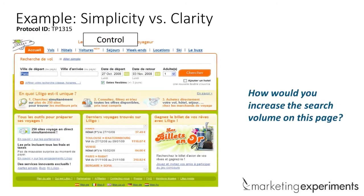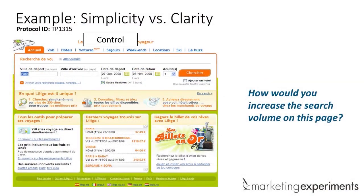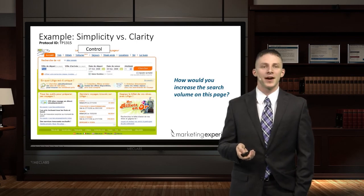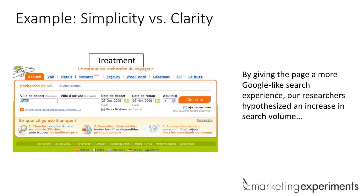Let's look at an example. Audience, how would you increase the search volume on this page? We've got a French flight site — think of something like Expedia. Responses coming in: remove the clutter, larger and clearer search bar, one search box. The team hypothesized something very similar — by giving it a more Google-like search experience, simplifying it to just one thing — just search — we would increase search volume.